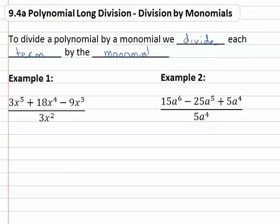Instead we have to do just this, we have to divide each term by the monomial. In other words, the 3x to the fifth has to be divided by the 3x squared. The 18x to the fourth has to be divided by the 3x squared and the minus 9x cubed has to be divided by the 3x squared.